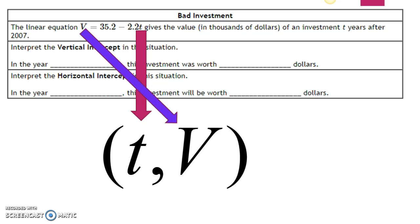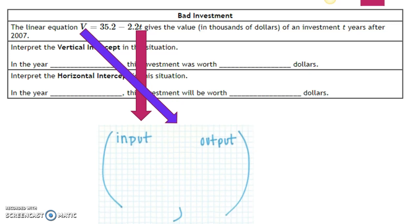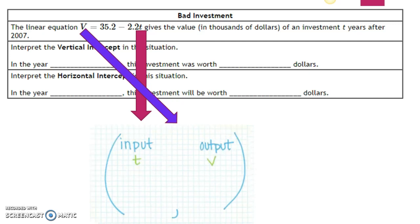We also need to know which one of those is input and which one of those is output. The first value of your ordered pair is always the input value and the second value of your ordered pair is always the output value. So in this particular equation, t is the input variable and v is the output variable.